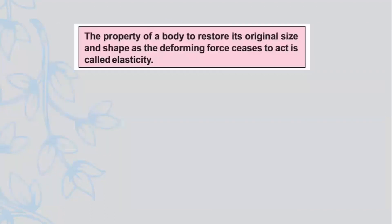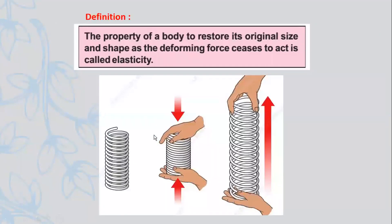Next we will discuss the definition of elasticity. Write heading: definition. The property of a body to restore its original size and shape as the deforming force ceases to act is called elasticity. This means that when the deforming force is very small or removed, the body returns to its original shape and size.